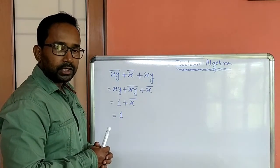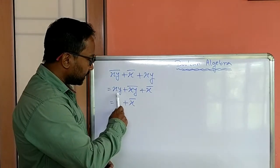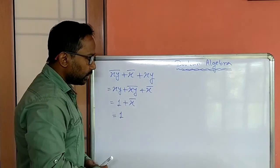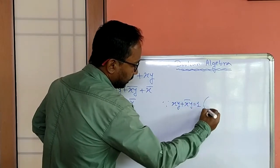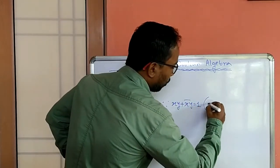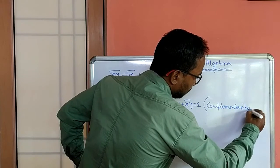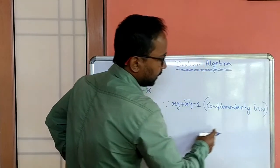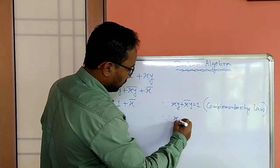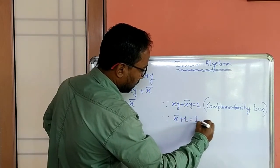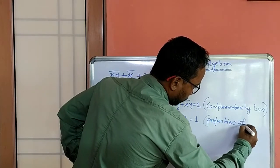Now sometimes in a question it will be mentioned to specify the boolean laws in each step for the simplification. So in that case, for xy plus xy whole not equal to 1, we have to write xy plus xy whole not equal to 1, and the law also we have to write in bracket, that is complementarity law. And next one is properties of 1: x not plus 1 equal to 1, that is properties of 1.